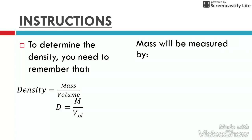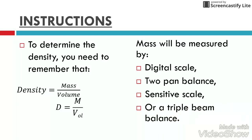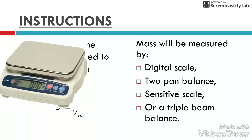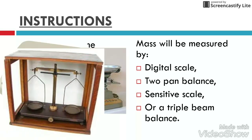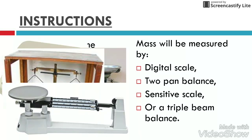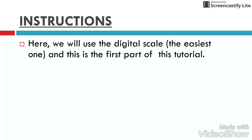Mass will be measured by a digital scale, a two-pound balance, a sensitive scale, or a triple beam balance. Here is the digital scale, two-pound balance, sensitive scale, and the triple beam balance. Here we will use the digital scale, which is the easiest one, and this is the first part of this tutorial.